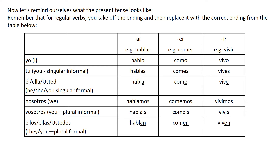Then we've got hablamos, comemos, bebemos. You can see that the A stays, the E stays, and that I stays. So although we've taken AR, ER and IR off, they're reflected in the endings because the endings are slightly different for each verb type.